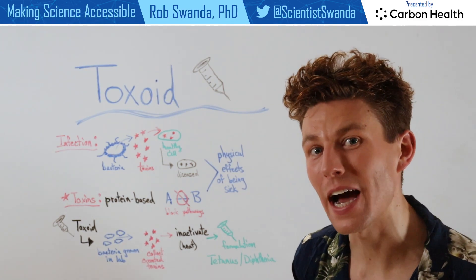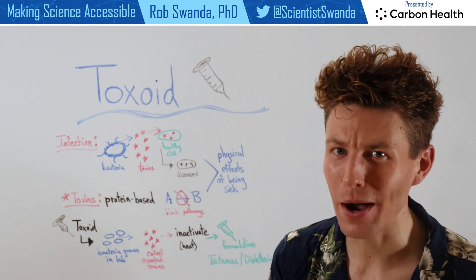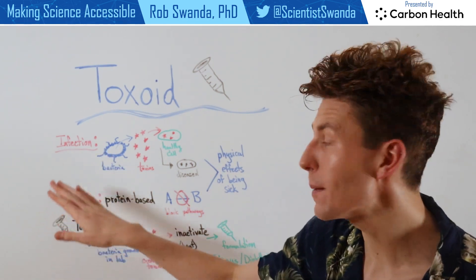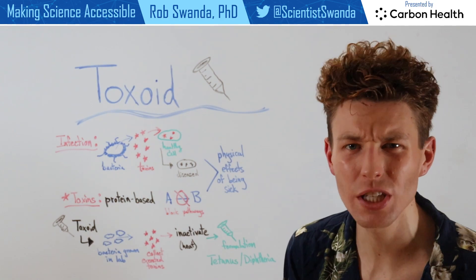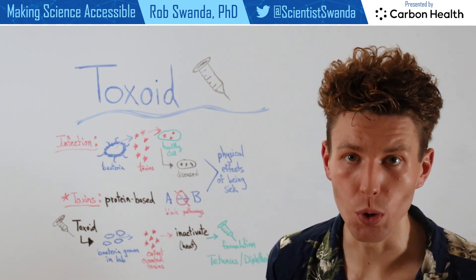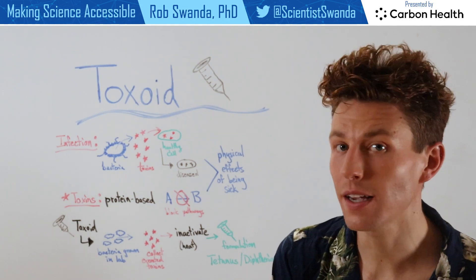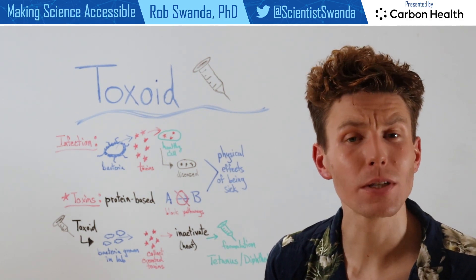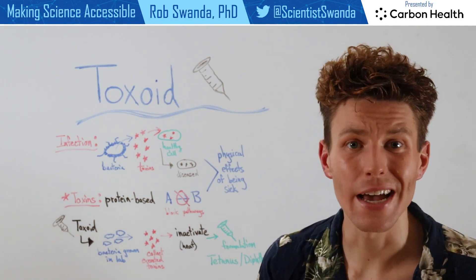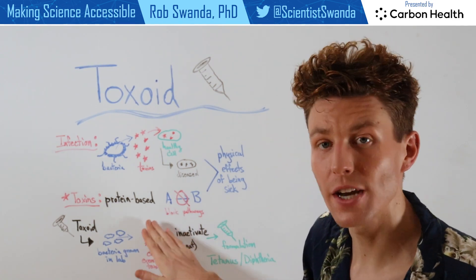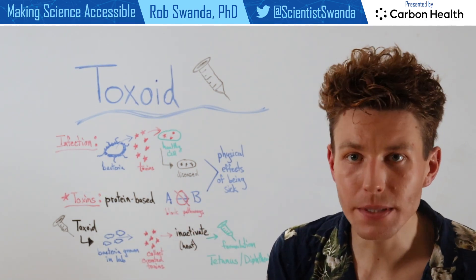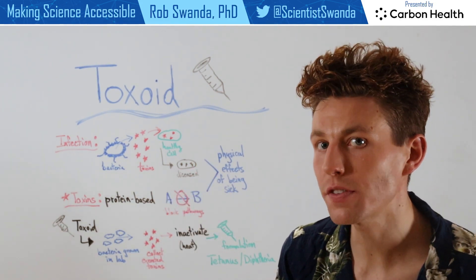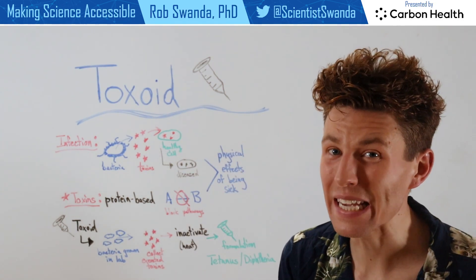But before we actually deep dive into how these work, let's first talk about what even is a toxin. So during an infection, certain types of bacteria can release toxins, which are typically protein-based, into their host. These toxins can then go on and enter healthy cells. Once inside those healthy cells, they can disrupt certain pathways, such as proteins that we need moving from location A to location B. This disrupts the cell cycle and can lead to a diseased state, and typically this is often associated with those physiological effects of being sick.